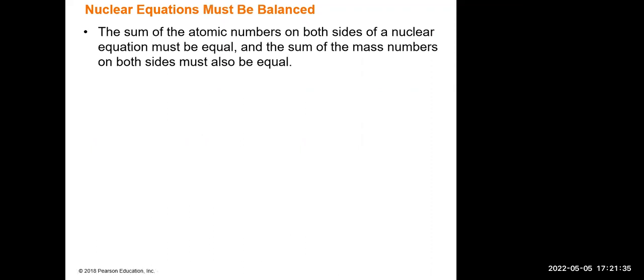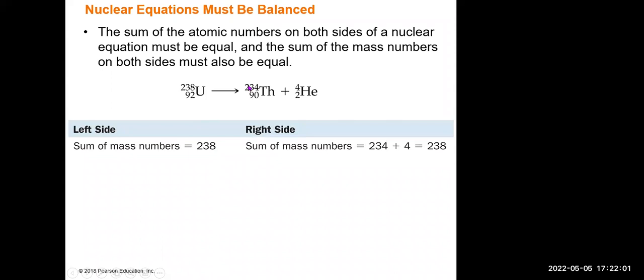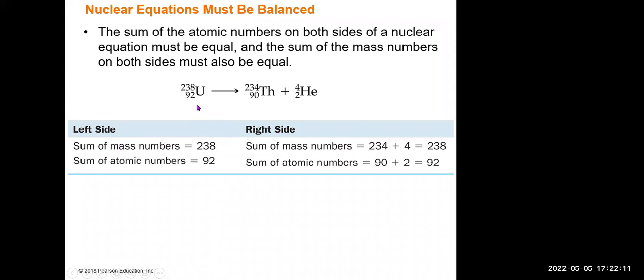We must balance nuclear equations differently: the sum of the atomic numbers on both sides must be equal, and the sum of the mass numbers on both sides must also be equal. For uranium-238 alpha decay: the mass number 238 on the left equals 234 plus 4 on the right; the atomic number 92 on the left equals 90 plus 2 on the right. Both sides are balanced.